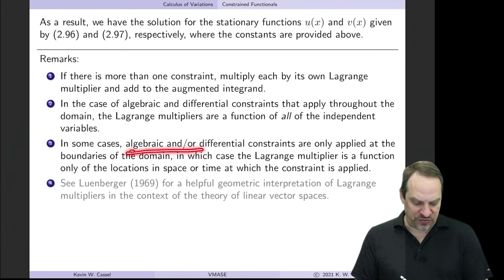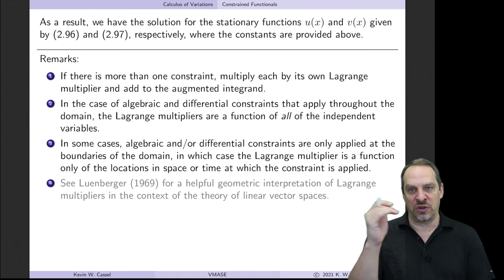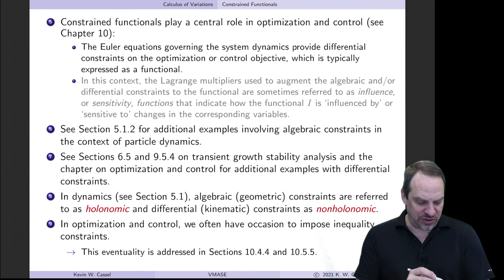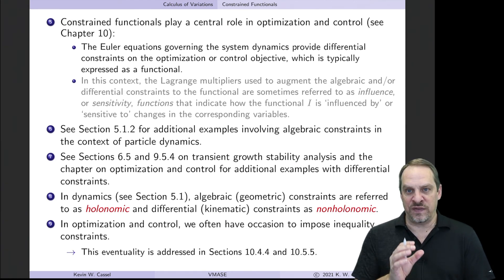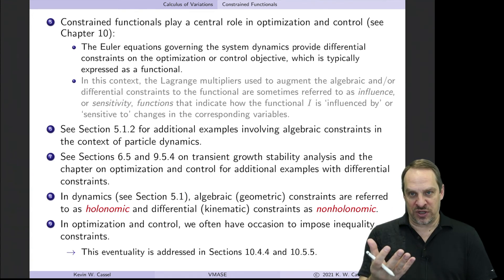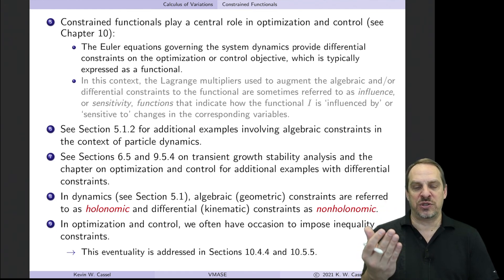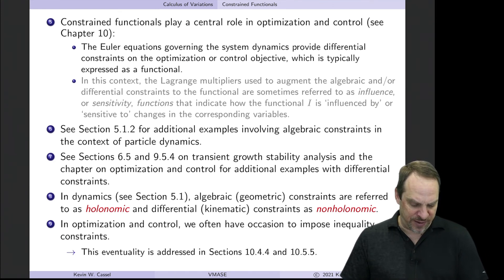In some cases, algebraic or differential constraints may be applied only on the boundaries, in which case your Lagrange multipliers are only functions of the variables along those boundaries. These differential constraints are going to come up throughout the applications in parts two and three of the book. In particular, in part three dealing with optimization and control — chapter 10 and on — we'll often have differential constraints as the governing equations for the system, with an objective or cost functional to minimize or maximize subject to the constraint that the governing differential equation be satisfied.